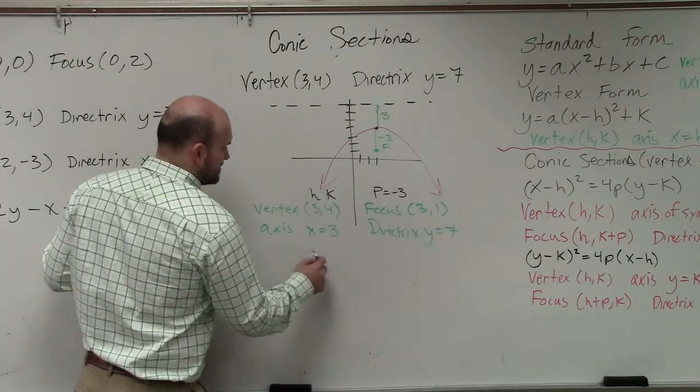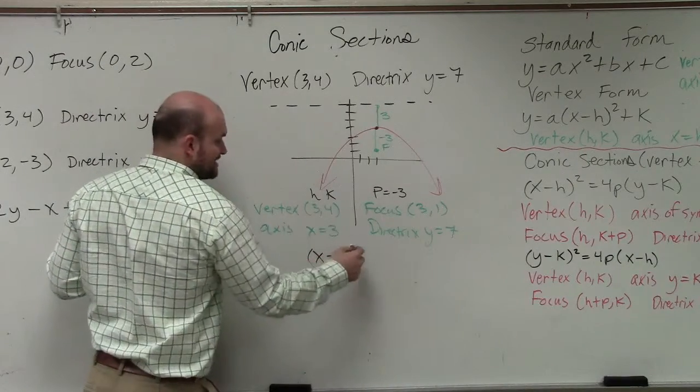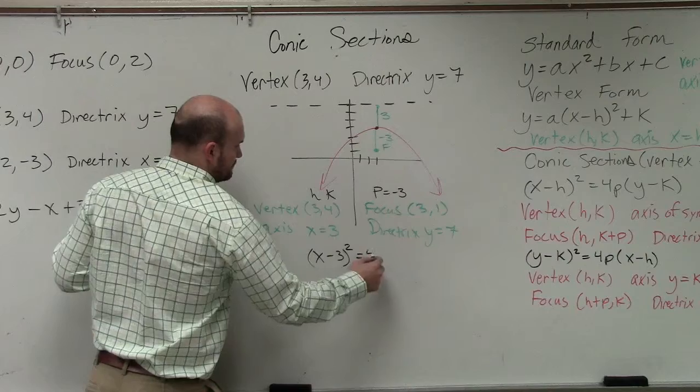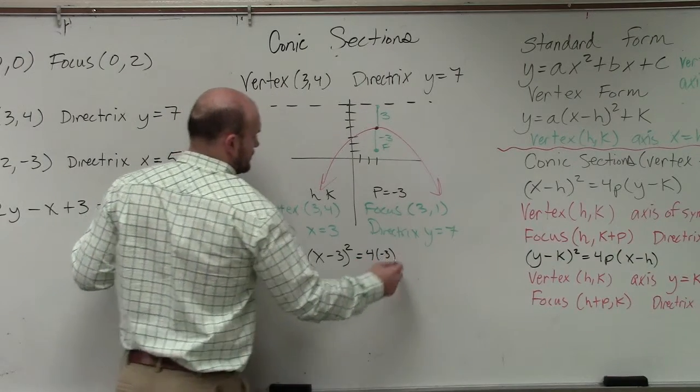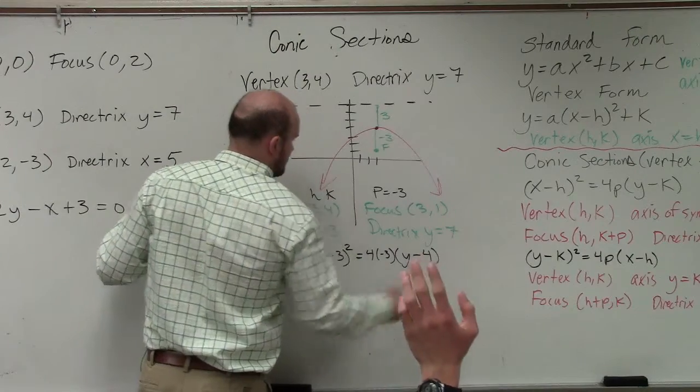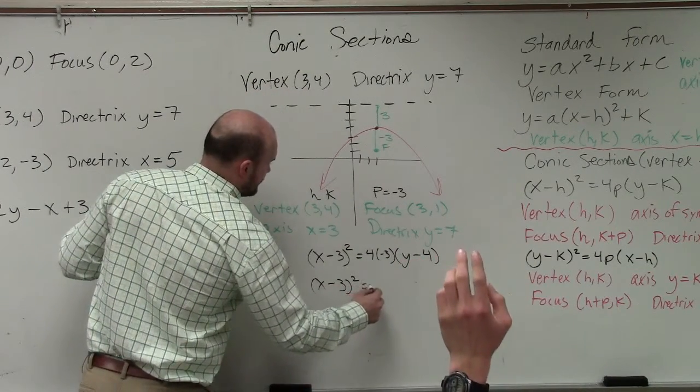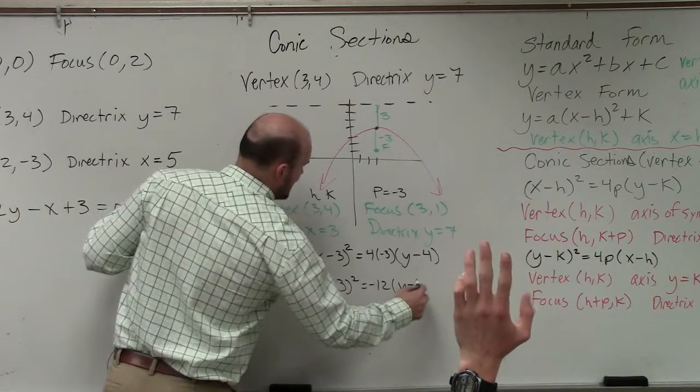So when I go and plug in my points, I have x minus 3. Since the graph opens down, I know x is going to be squared. So I have x minus 3 squared equals negative 12 times y minus 4.